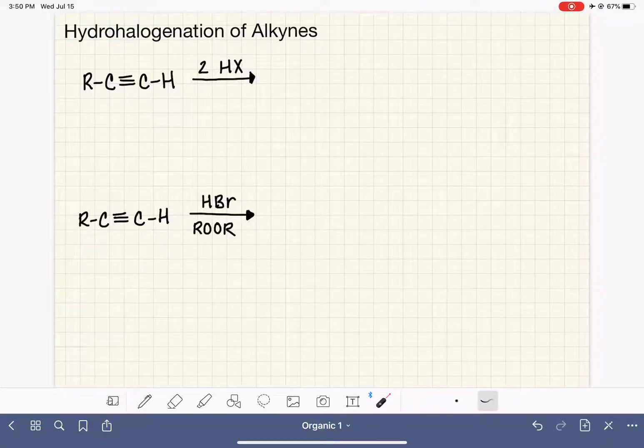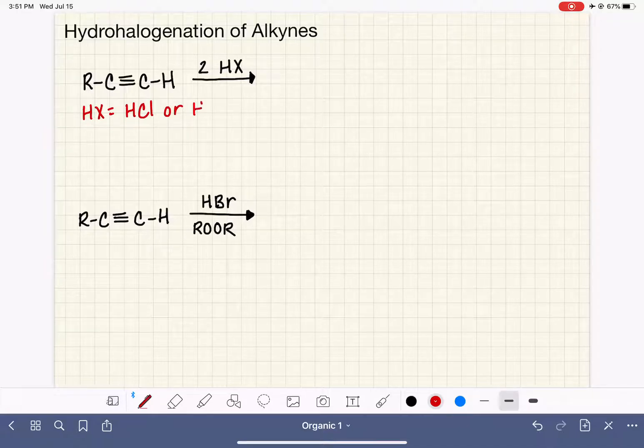Hydrohalogenation of an alkyne is a reaction that takes place between an alkyne and an HX molecule. HX molecules are typically HCl or HBr.